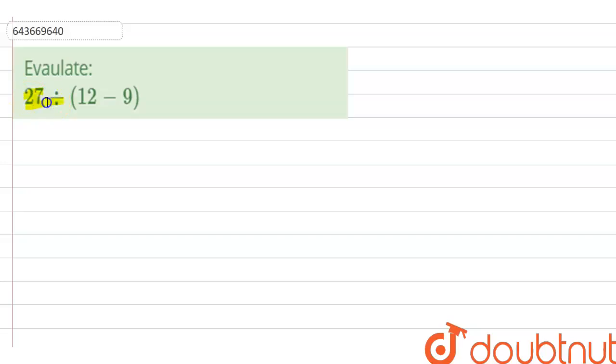Alright, 27 divided by, in bracket, 12 minus 9. Okay, so let's solve this question, guys. First of all, we will write down this question.